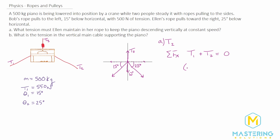T1 is going in the negative x direction, so we have negative T1 times cosine of theta 1. T2 is going in the positive x direction, so we add T2 cosine of theta 2, and the whole expression equals zero.